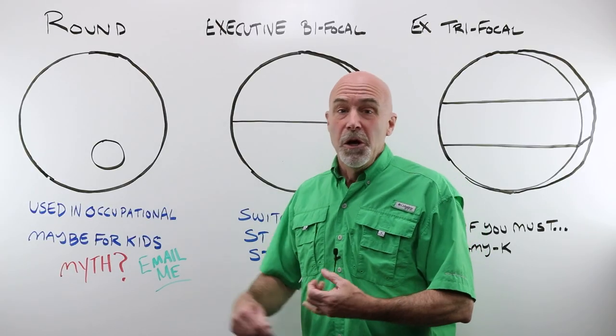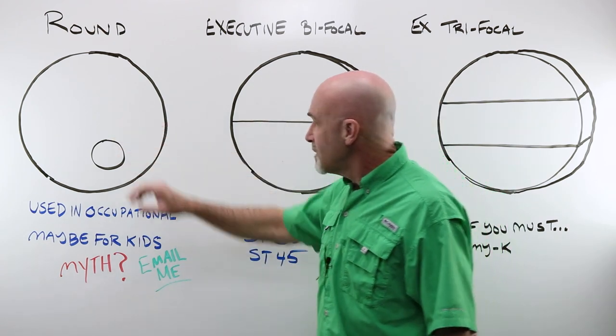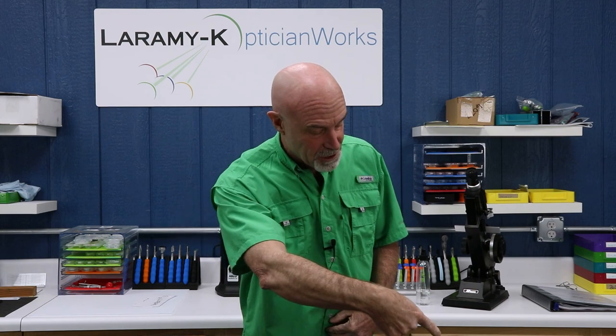So there you have it. We have single vision, lined bifocals, lined trifocals, round segments, executive bifocals, and executive trifocals. As always, thank you so much for watching. If you are watching us on Facebook, please give us a like. Watching me on YouTube, please go ahead and hit that subscribe button down there in the corner. Feel free to leave me a comment. And make sure that every single vision, lined bifocal, lined trifocal, and maybe even a round segment comes from Laramy-K. Okay. I will see you again next week.